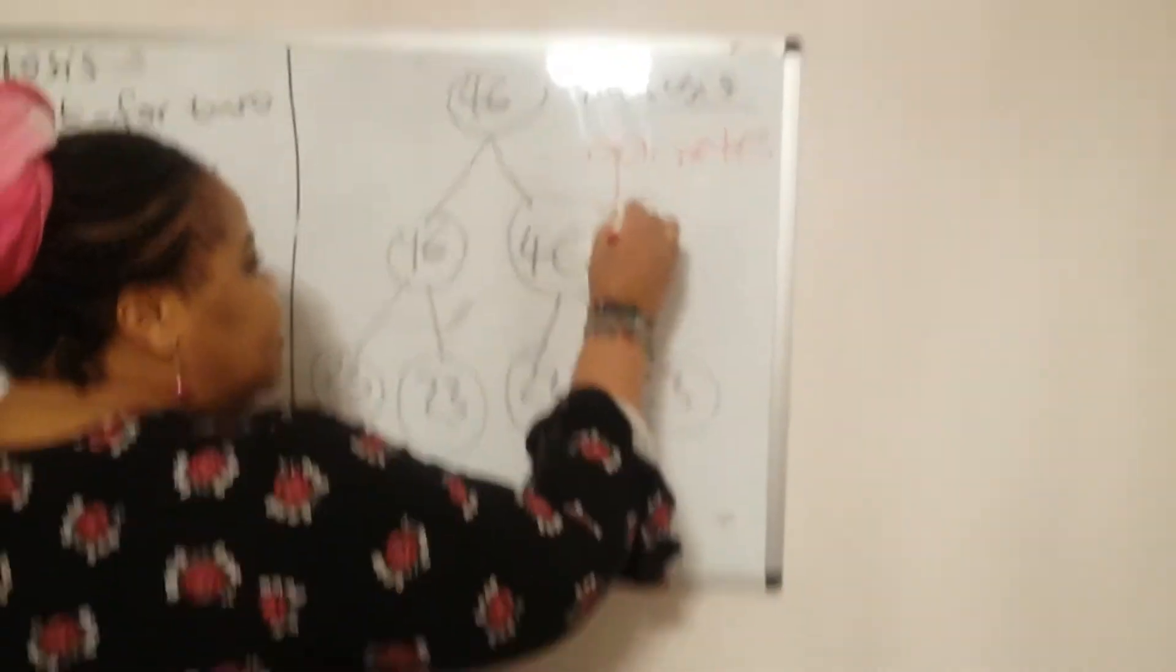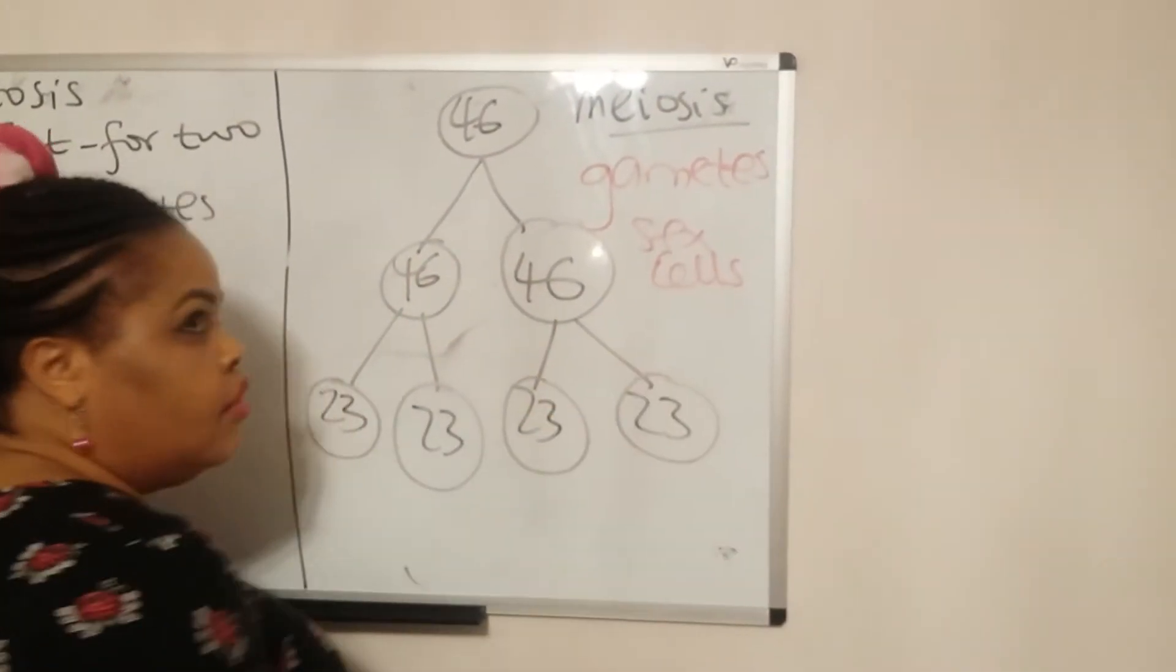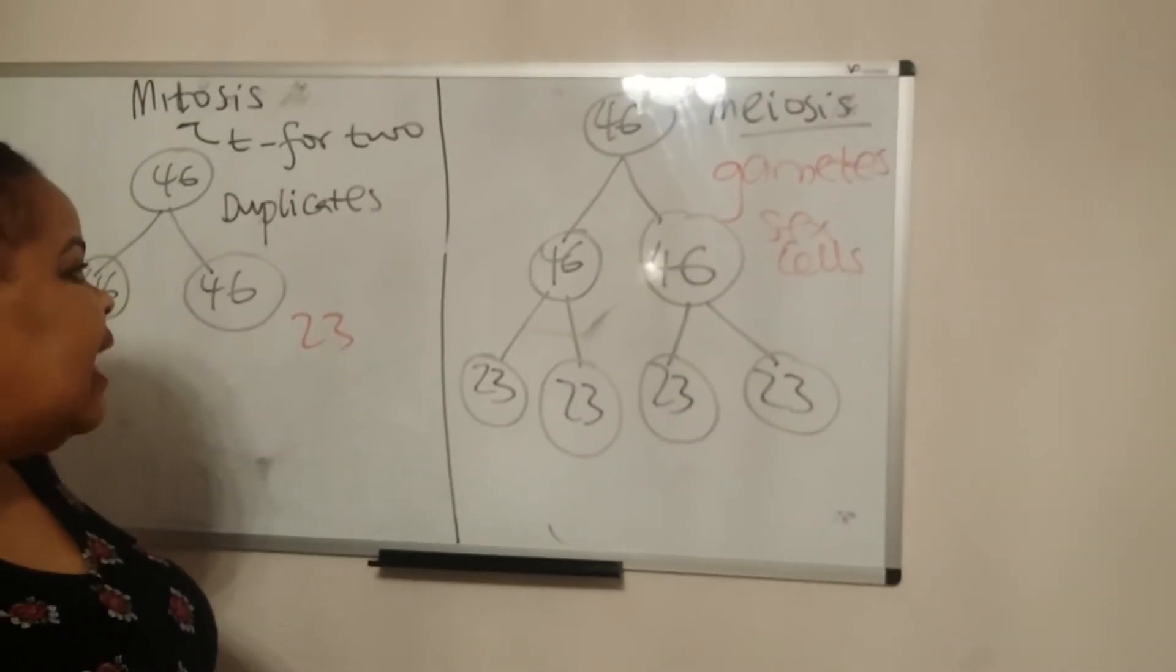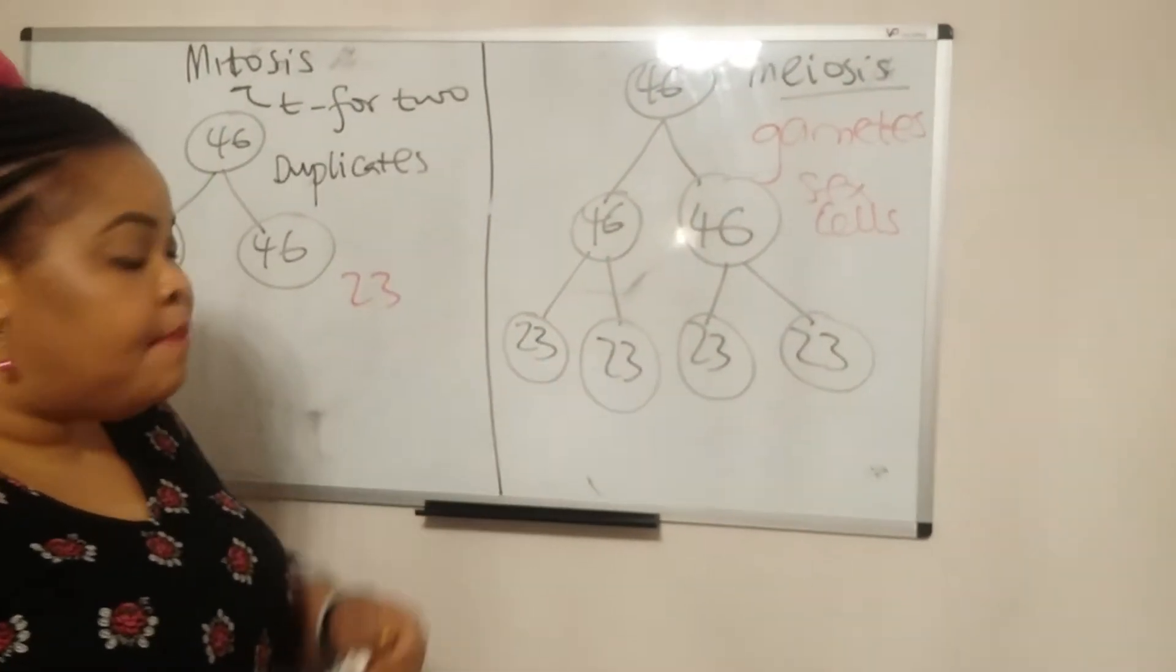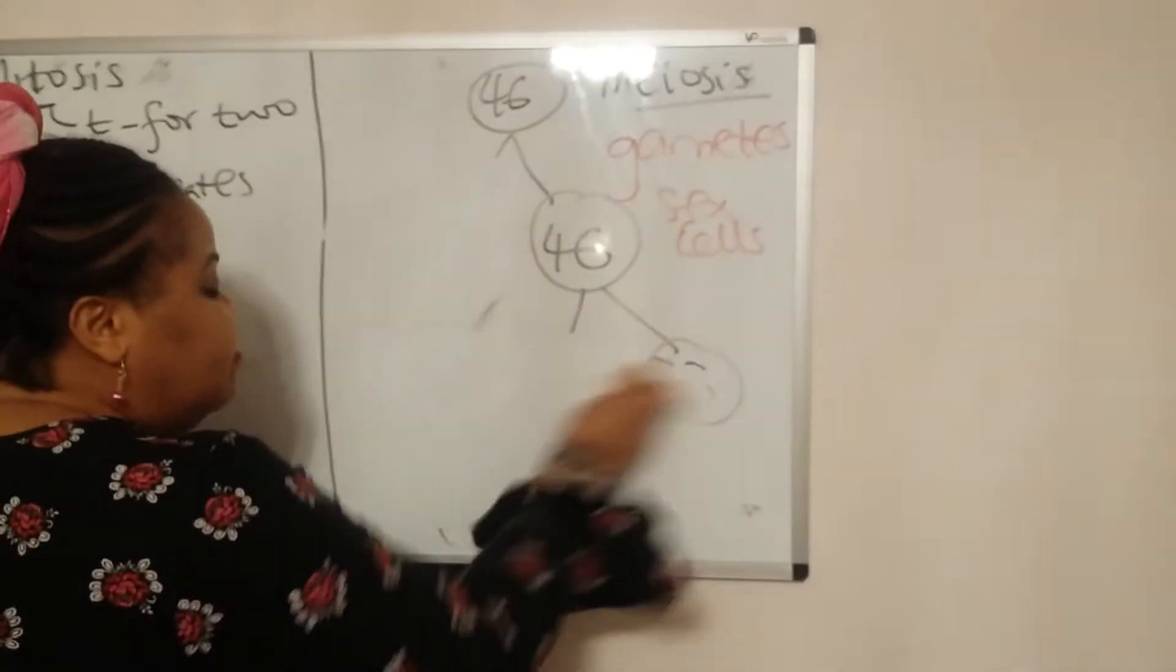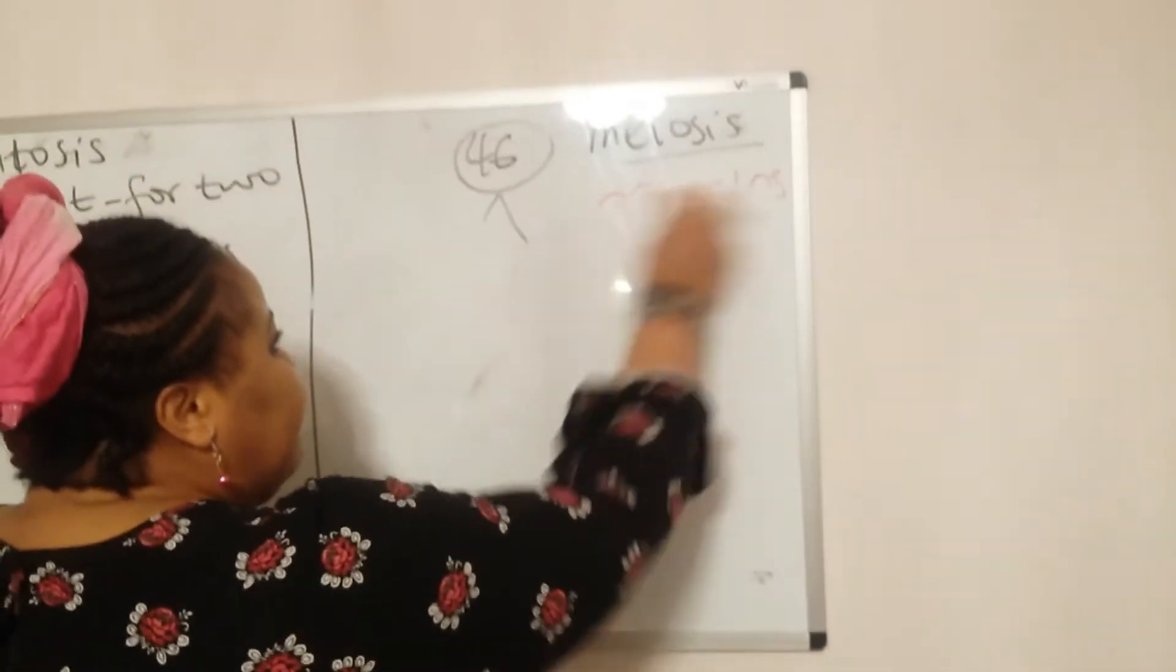Keyword: gametes are sex cells, like sperm and egg cells in humans, and pollen and ovum in plants.